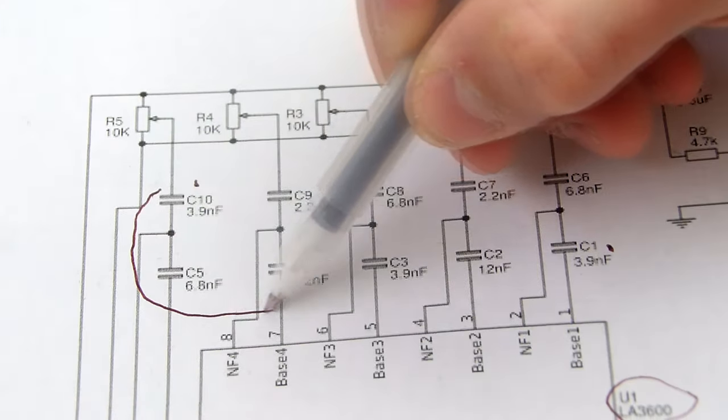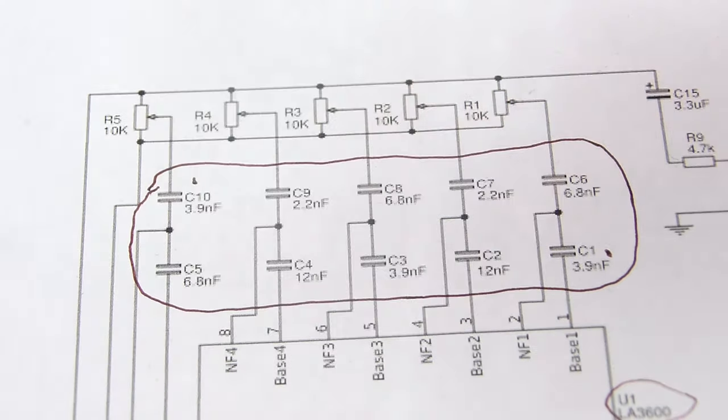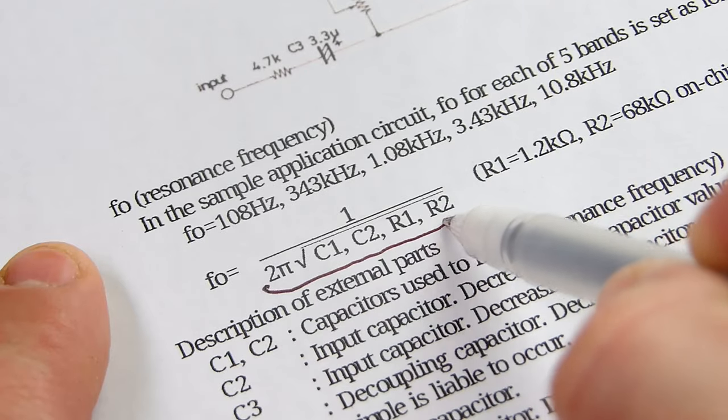C1 to C10 are used to set the resonant frequency of the audio signal. The capacitor values can vary slightly. With this formula, you can calculate the filter frequency.